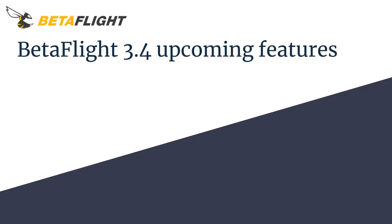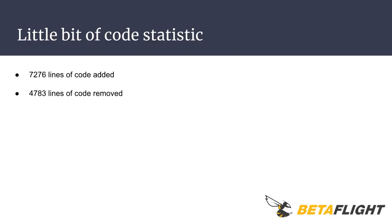Hello, let's take a look at the upcoming features in Betaflight 3.4. A little bit of code statistics for the beginning: 7,276 lines of code were added and 4,783 lines of code were removed.